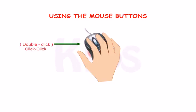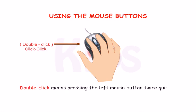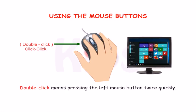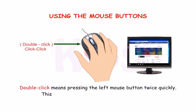Double click means pressing the left mouse button twice quickly. This makes two click sounds and opens an item.